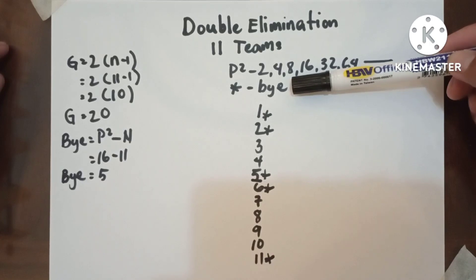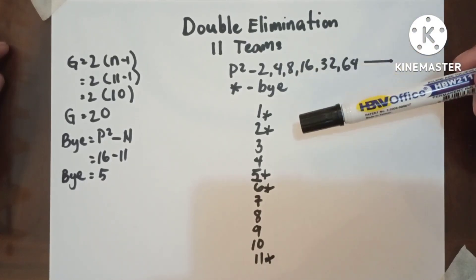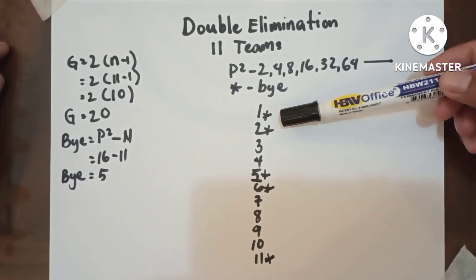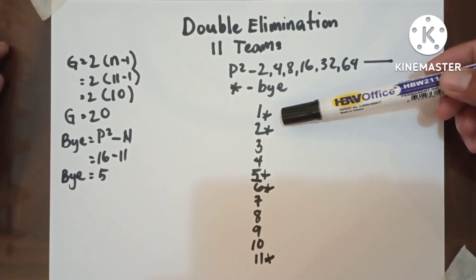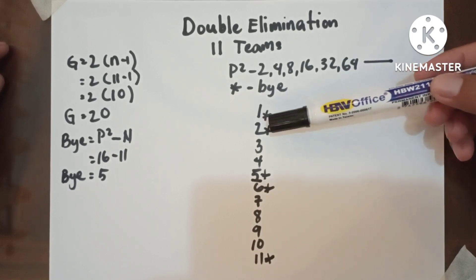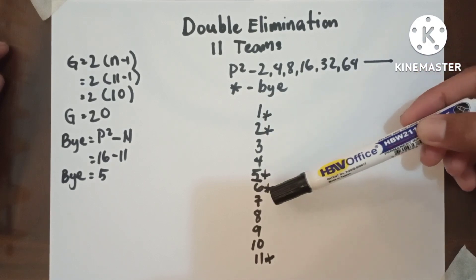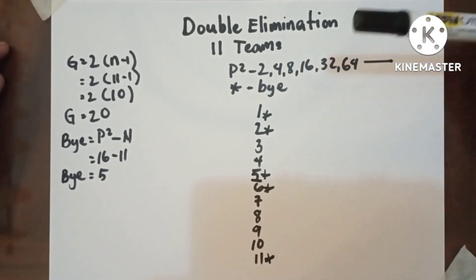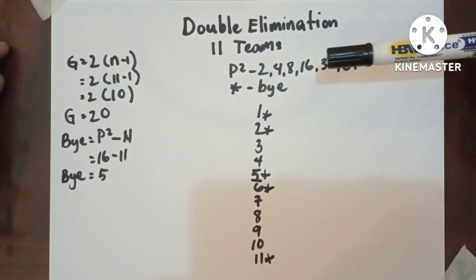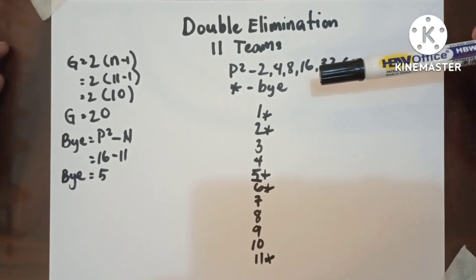Now this is the proper place for the five byes in 11 teams: one, two, five, six, and eleven. Now let's proceed to the diagram and game schedule.